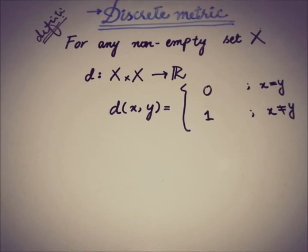We've defined the function such that if the two elements from X are same, then the function maps it to 0, and if the two elements of X are not same, then the function maps it to 1. So there are only two possible values for the function: 0 and 1.